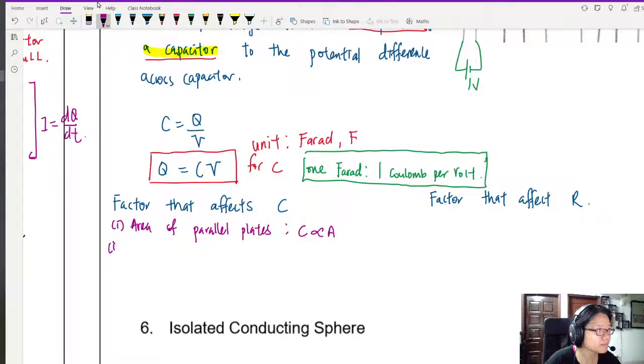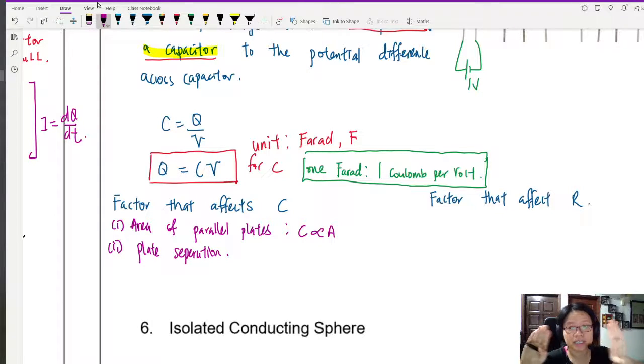Less work done to displace or mobilize the charge or put the charge on the plate. Second more. Plate separation. When your plates are further apart, it's harder to induce the charge of the opposite plate. Meaning it's harder to have charge. So here, your C is inversely proportional to the plate separation, let's say D.